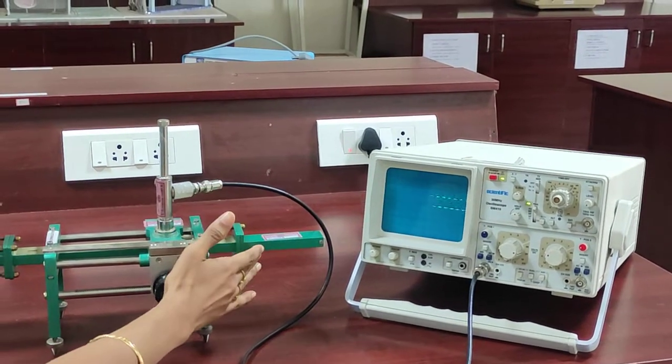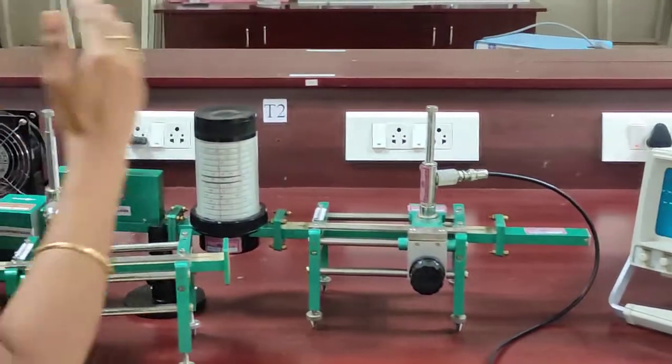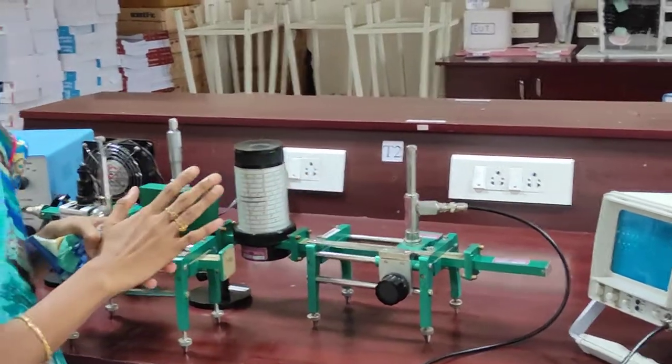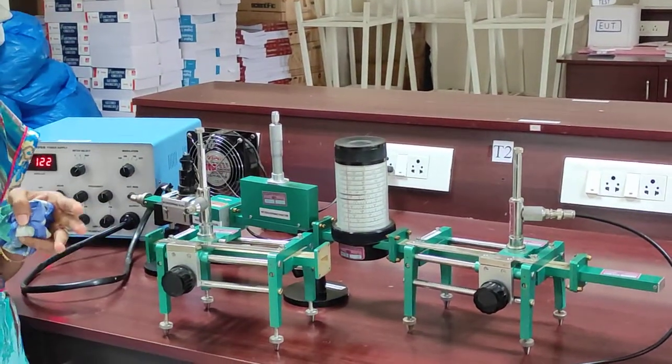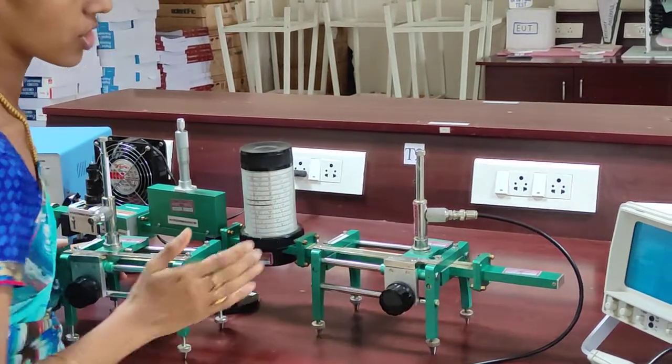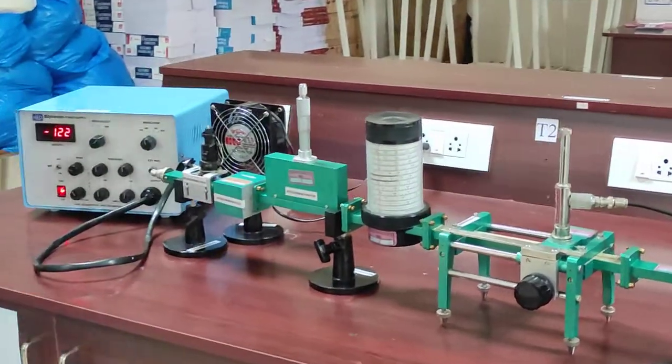That is load. When at last I connect, then only I can get the wave here. This is load. These are the two extra setups that we are doing when comparing with the previous experiment. This is slotted line section and this is matched load. Now we will see about the measurement part.